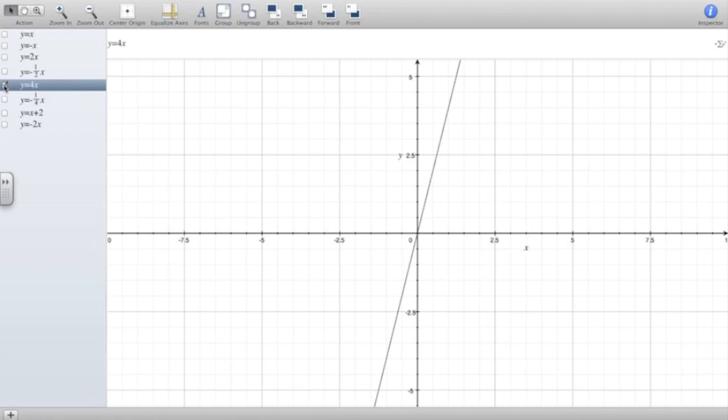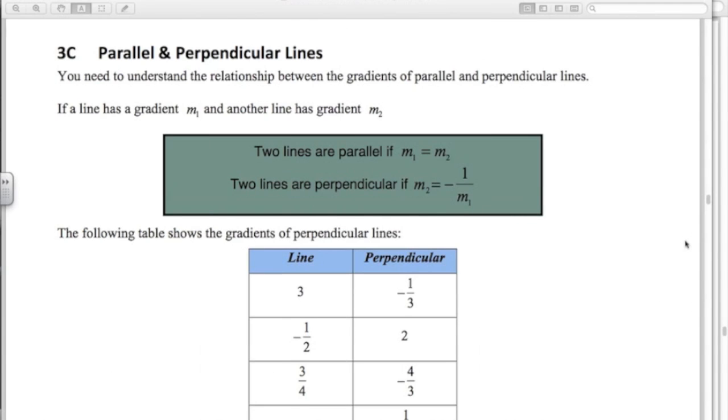Here's y equals 4x, gradient of 4. Here's y equals negative 1.5x. 4x and negative 1.5x. So what is the relationship between two lines that are perpendicular? Here it is here.